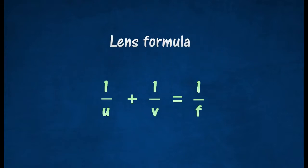For a thin lens, the object distance u, image distance v, and the focal length f are related by the equation shown.